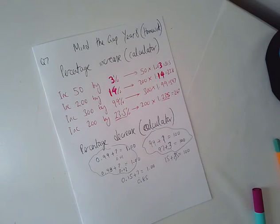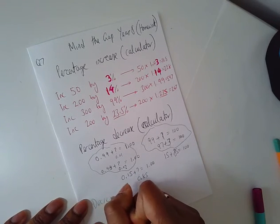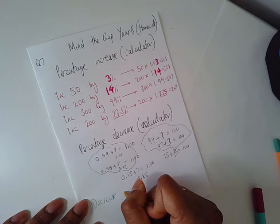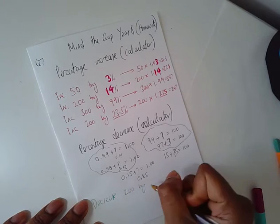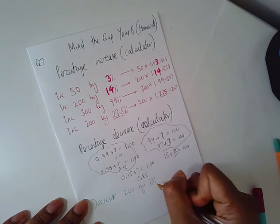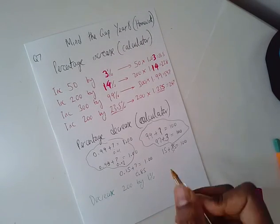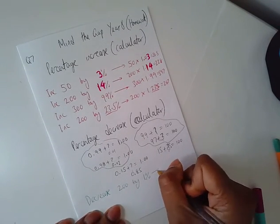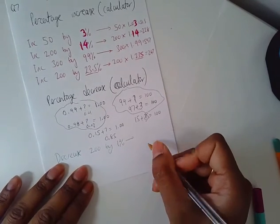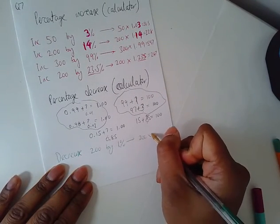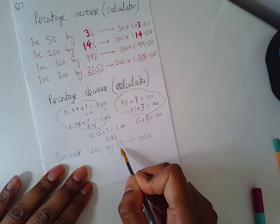Let's do the percentage decrease using a calculator. After you've seen a couple of questions, you'll see the pattern. I want to decrease 200 by 1%. So that 200, so don't just do 200 take away 1. This is what you do on the calculator. 200 multiplied by, not 1.01.